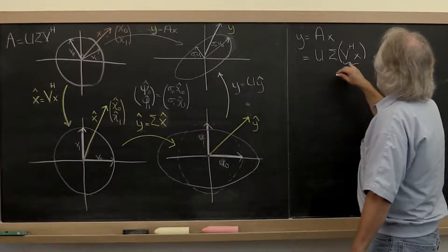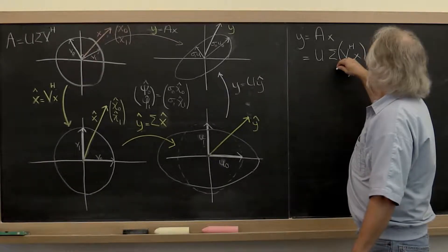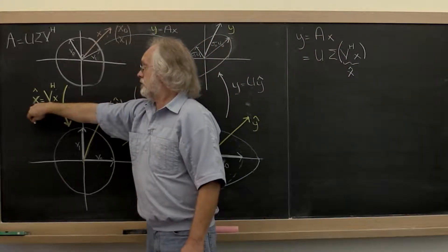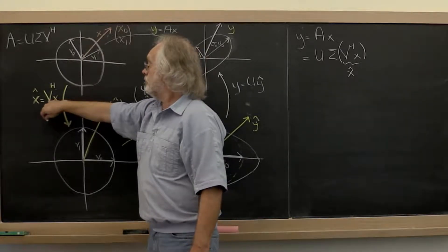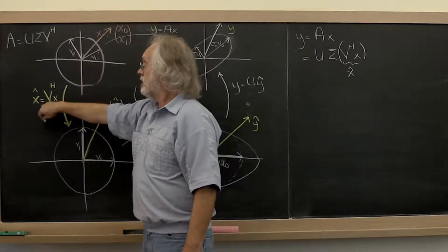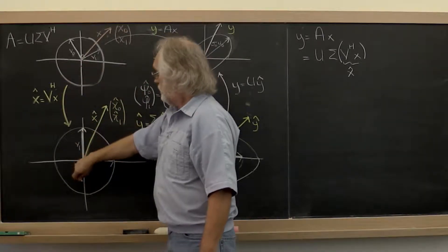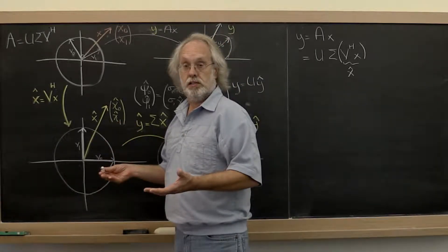That V Hermitian transpose x is a change of orthonormal basis. This really just gives us the coefficients when we view x in terms of the orthonormal basis given by the columns of matrix V. So we go from here to here where all we do is a change of orthonormal basis.